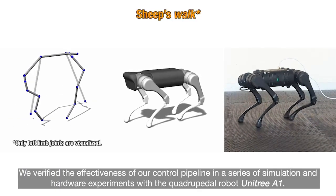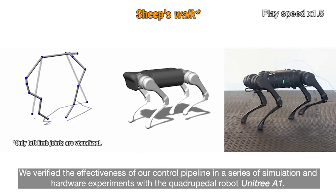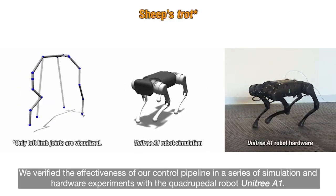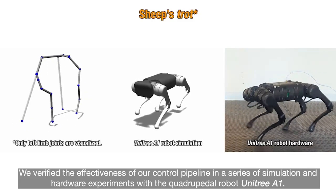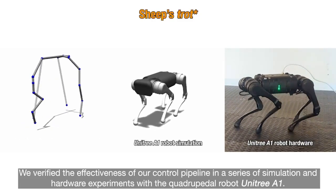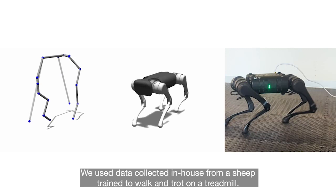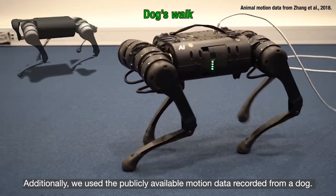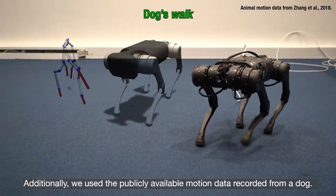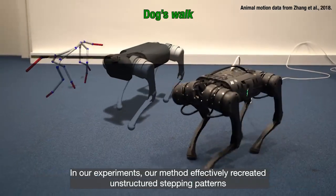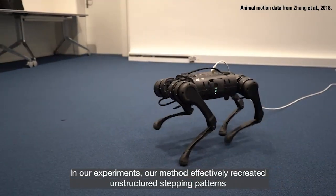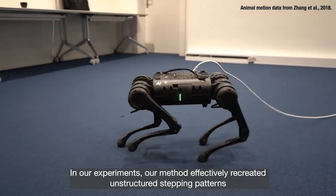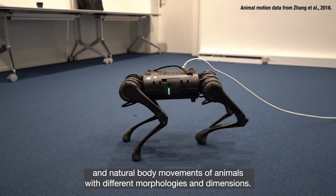We verified the effectiveness of our control pipeline in a series of simulation and hardware experiments with the quadrupedal robot ANYmal. We used data collected in-house from a sheep trained to walk and trot on a treadmill. Additionally, we used publicly available motion data recorded from a dog. In our experiments, our method effectively recreated unstructured stepping patterns and natural body movements of animals with different morphologies and dimensions.